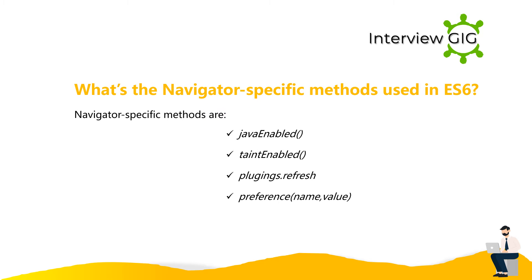What are the navigator-specific methods used in ES6? Navigator-specific methods include: javaEnabled, taintEnabled, plugins.refresh, and preference with name and value parameters.